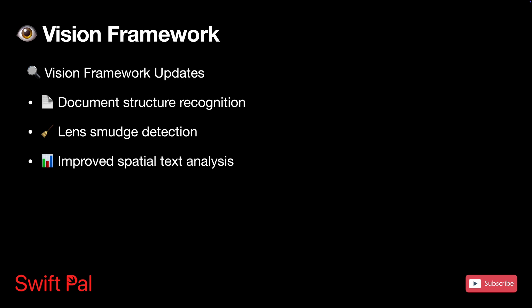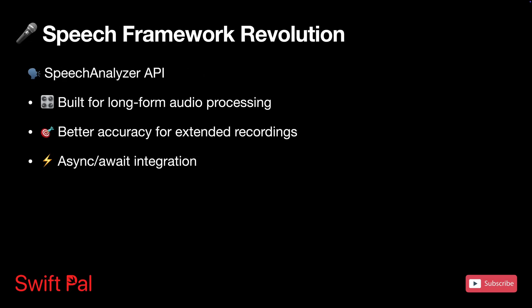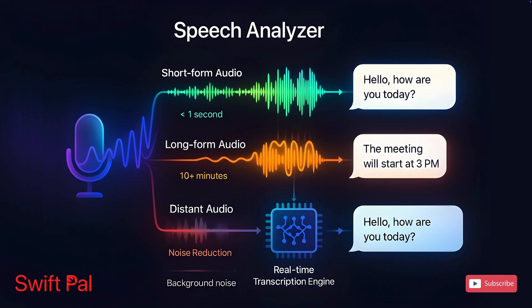The Speech framework also got a major upgrade that productivity app developers have been waiting for. The old `SFSpeechRecognizer` was fine for short stuff like dictating messages or voice commands, but try to use it for longer content and it gets cranky. iOS 26 is introducing the Speech Analyzer API, built specifically for long-form audio processing. The old system would give up on longer recordings or accuracy would drop off a cliff after a few minutes — not great if you're building a meeting transcription app or lecture recording tool.